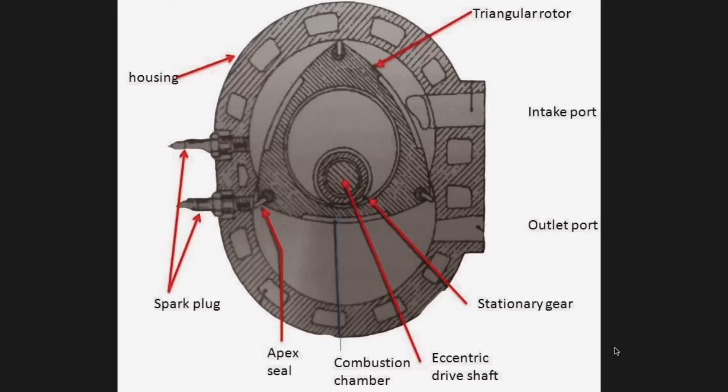The parts of a rotary engine are very minimal and this is one of its benefits over a piston engine, but we'll get into that later. This engine has a housing and within the housing there's a triangular rotor and the eccentric shaft. Interestingly enough, just like a piston engine, this engine uses four strokes: intake, compression, power, and exhaust stroke.